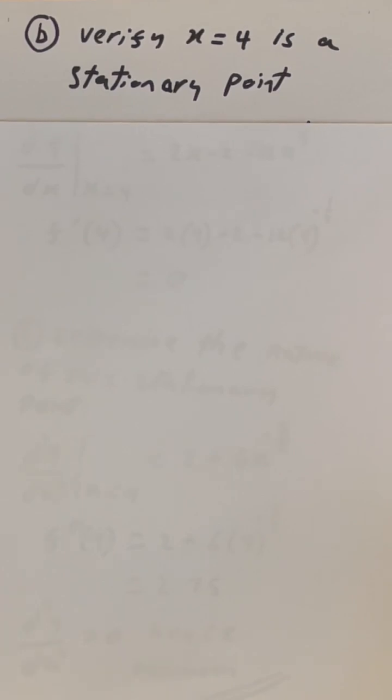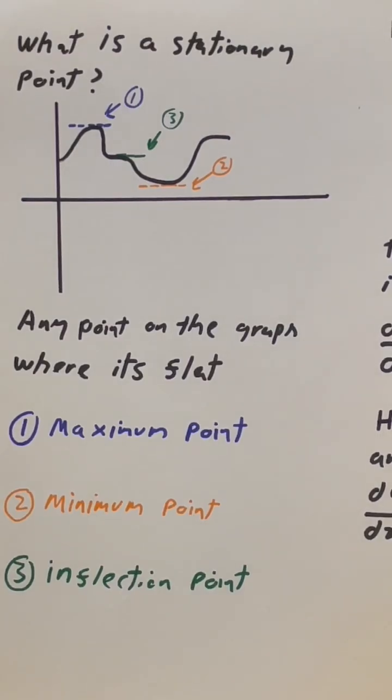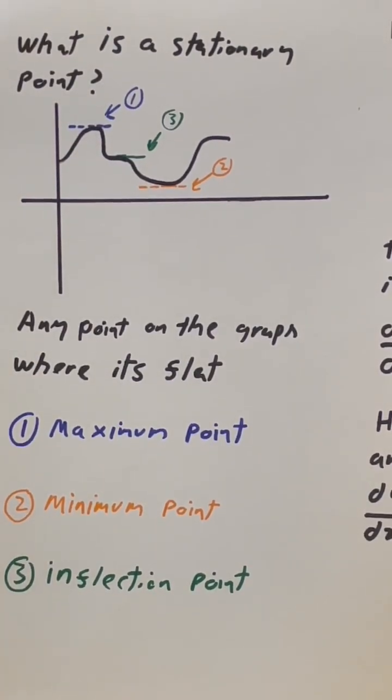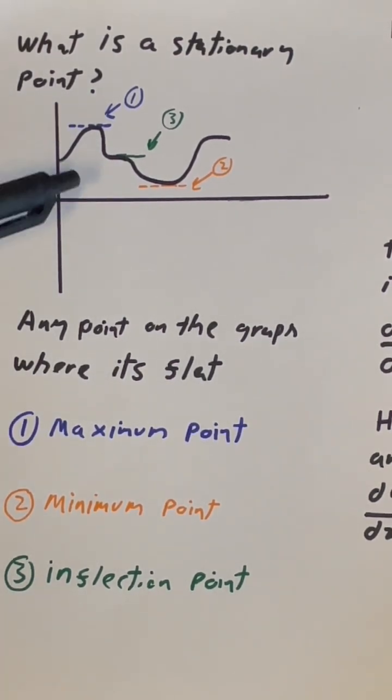Moving on to part B. Part B is asking us to verify that x equals 4 is a stationary point. A stationary point is simply any point on the graph where it's flat. We have three kinds of stationary points: a maximum point, a minimum point, and an inflection point.